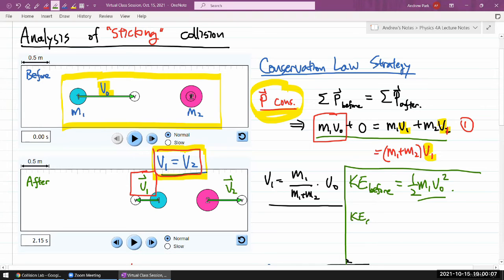Let's work out kinetic energy after. For kinetic energy after, we can treat the whole combined blob as one thing. So it'll be one-half the total mass M1 plus M2 times the speed V1 squared. And let me plug in this expression for V1. Then, what I have is M1 squared over M1 plus M2 squared times V0 squared.